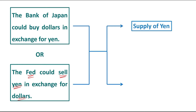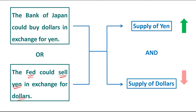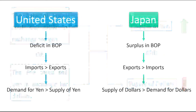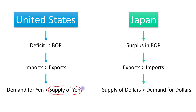Both solutions lead to the same conclusion: the supply of yen will be increased and the supply of dollars will be decreased in the foreign exchange market. When the supply of yen increases and the supply of dollars decreases, ultimately the equilibrium exchange rate will be maintained at a fixed level. This is how a central bank intervenes in the foreign exchange market under a fixed exchange rate system.